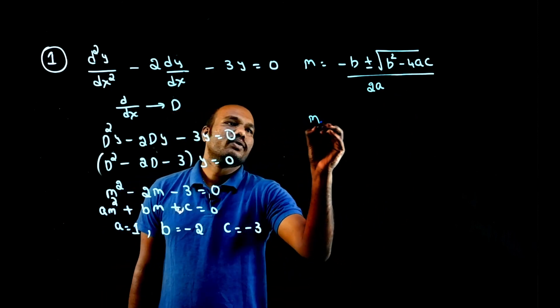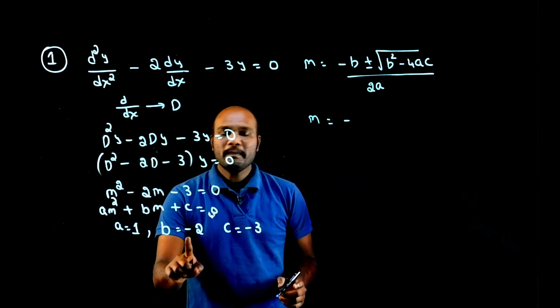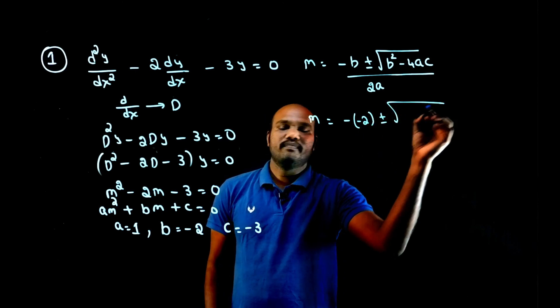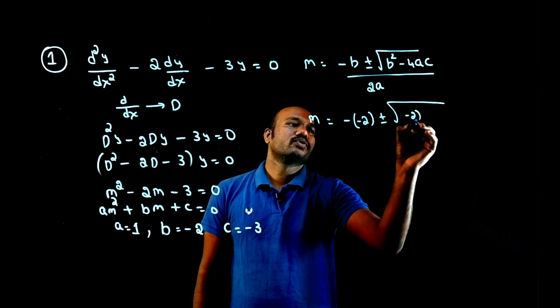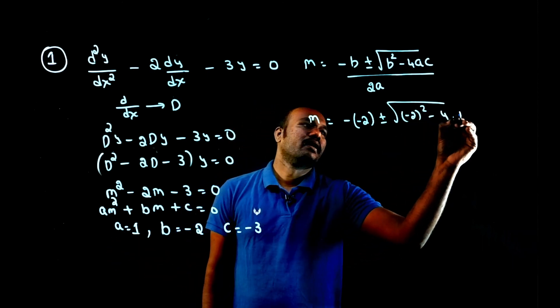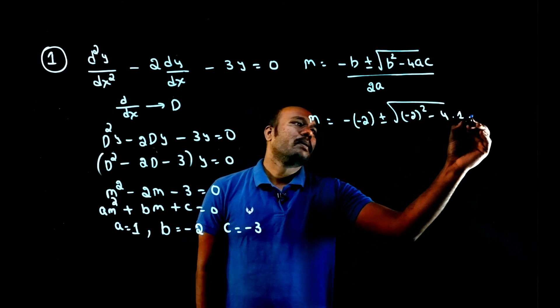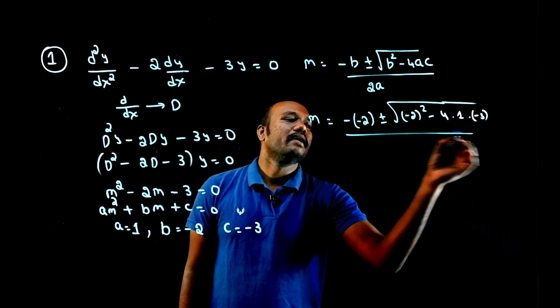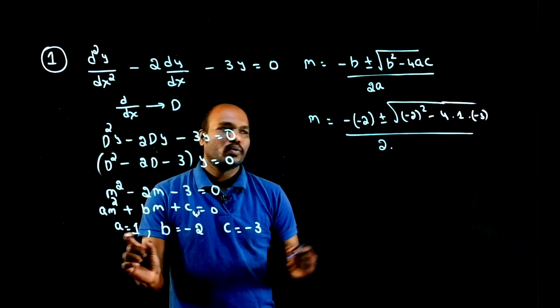So m is equal to minus b place. What is that b place? Minus 2 plus or minus root of b square, that is minus 2 square minus 4 into what is the value of a? 1. What is the value of c? Minus 3 divided by 2 times, what is a value? 1.